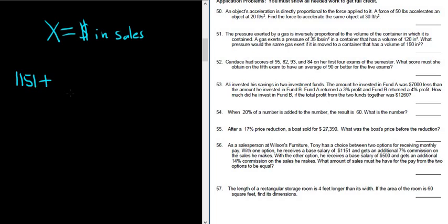plus 7% commission on the sales, so 7% of the sales. Of means multiply, so 0.07 times X.